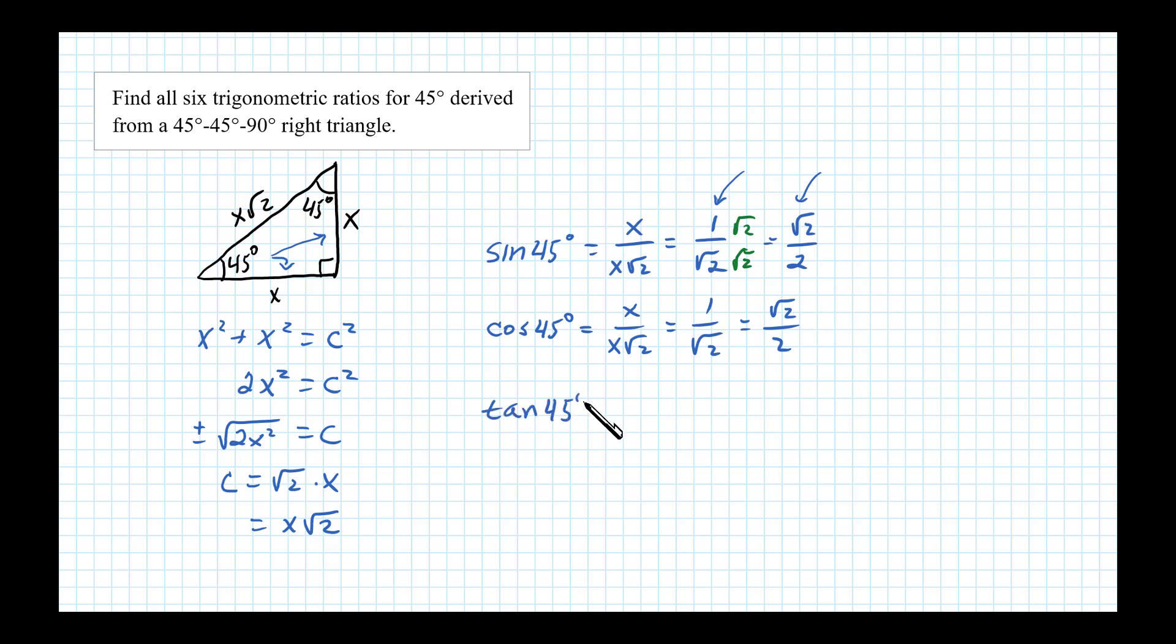Now tangent of 45 degrees is defined to be opposite over adjacent, so x over x is equal to 1, those x's divide out.